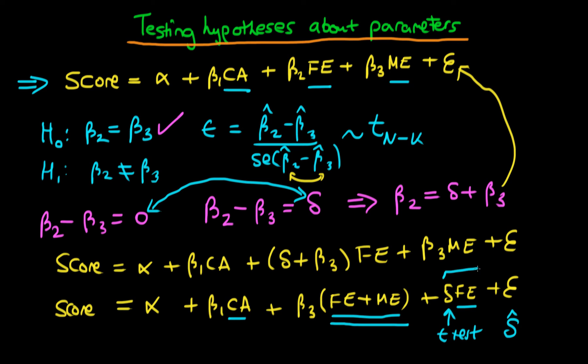Essentially this term here just represents the amount which is left over after we've already constrained father's education to have the same effect as mother's education. So just a simple t-test is a way of evaluating that on this delta term here.